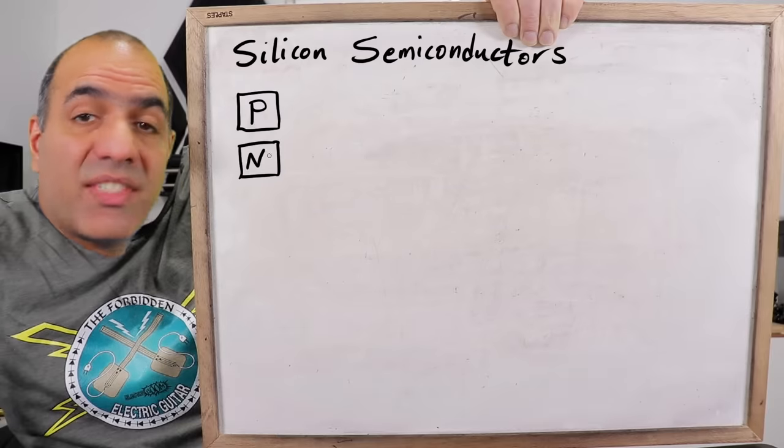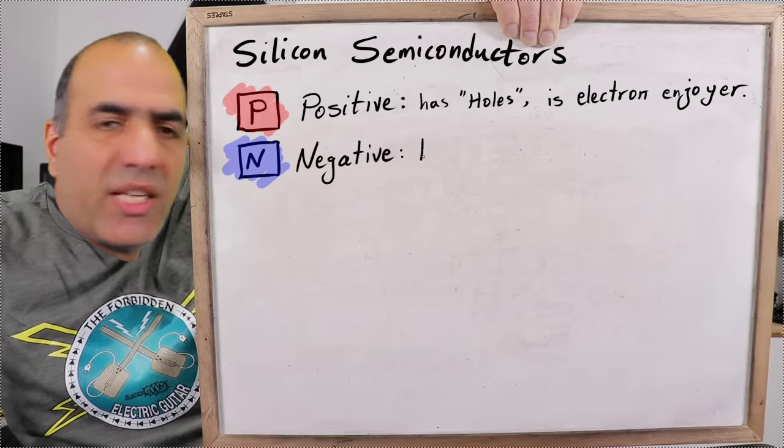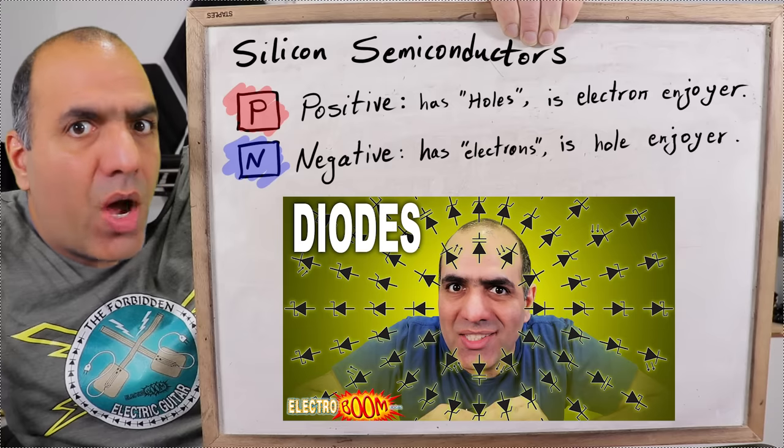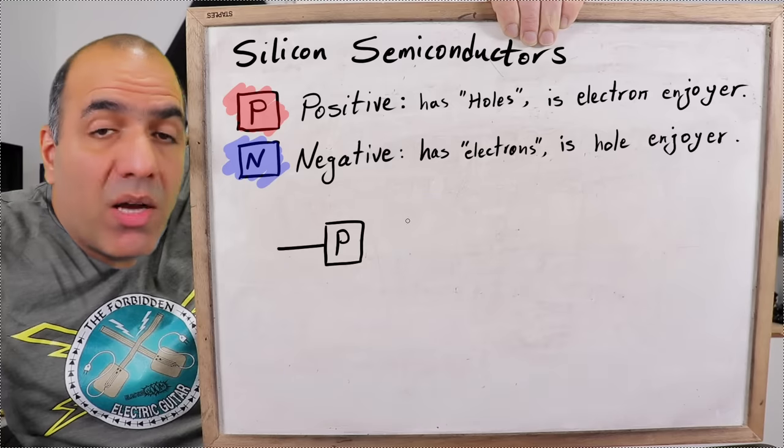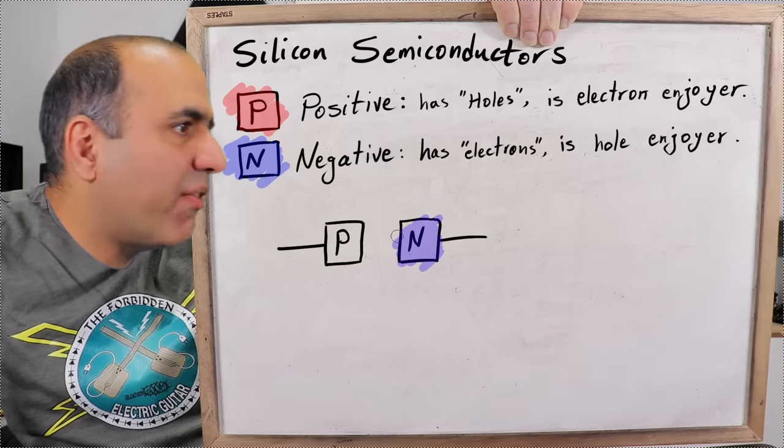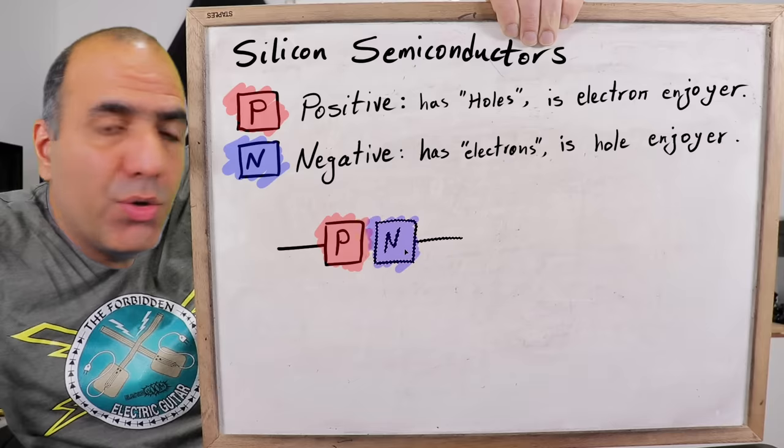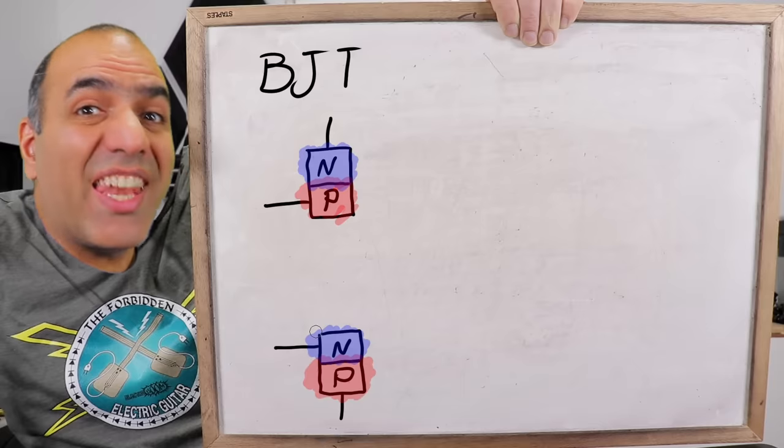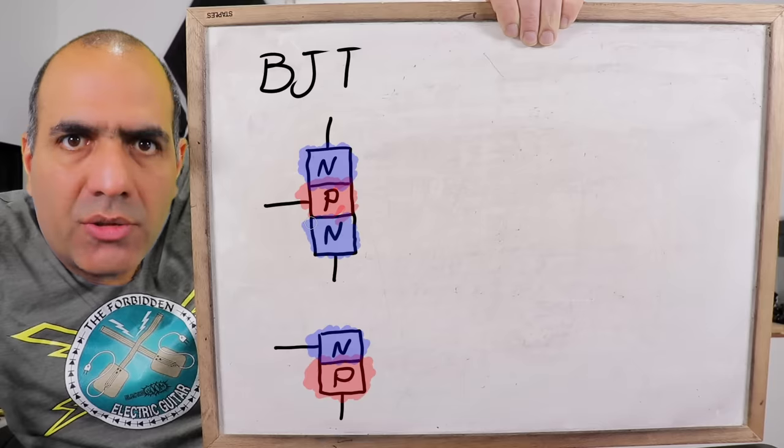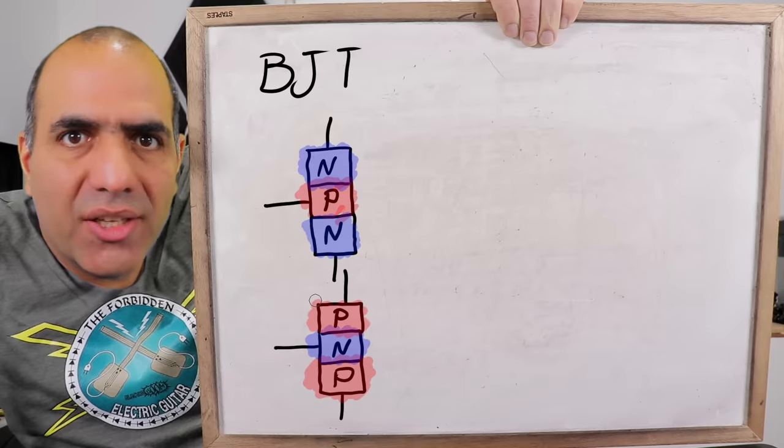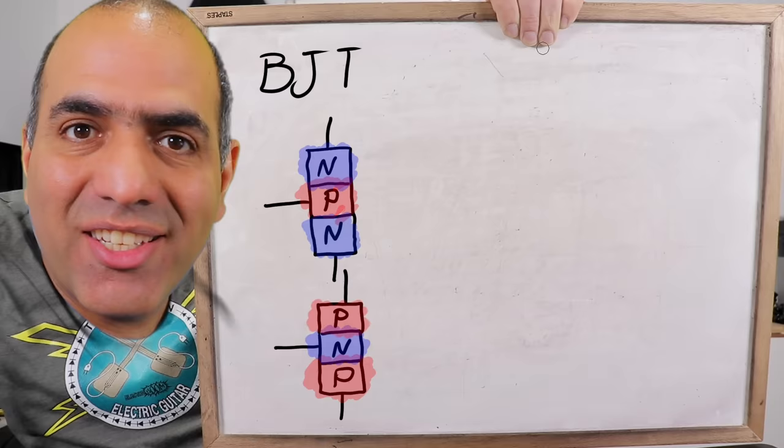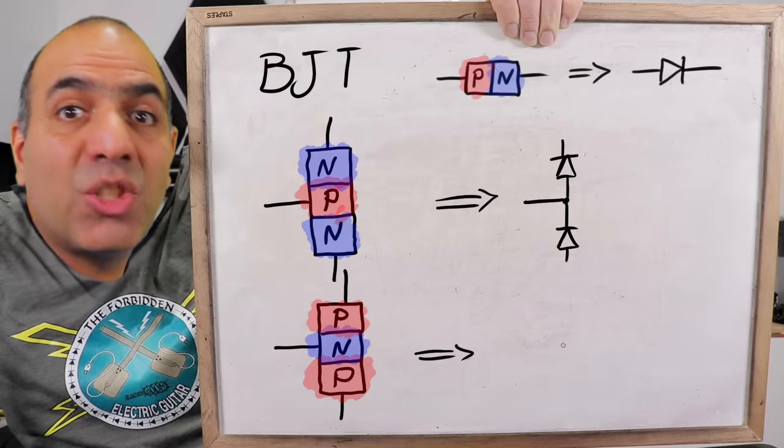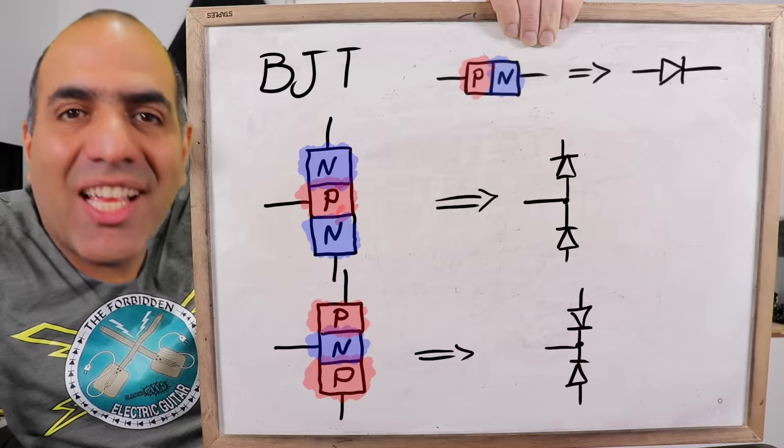It is made of silicon semiconductors, same as a regular silicon diode. If you have watched my diode video, you know how diodes work. We have a positive or P and a negative or N semiconductor fused together and that's a diode. Now imagine we also fuse an N to the P end of the diode or a P to the N end of the diode and that's it. We have a BJT.